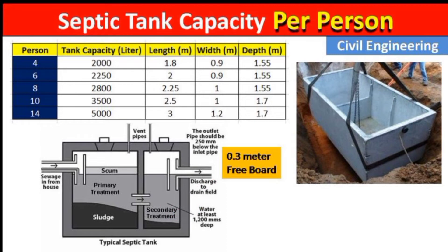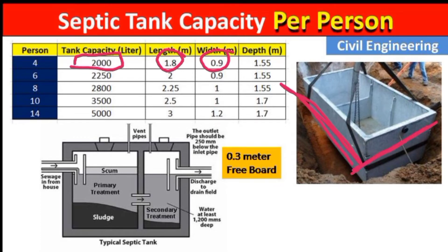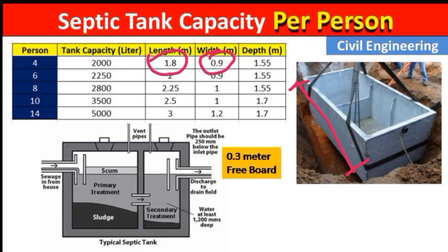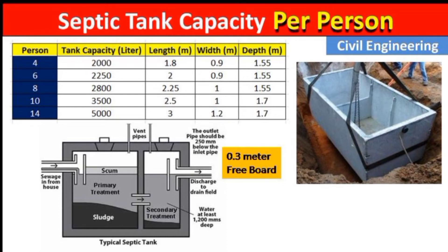Let us start our video. If you have four persons in your home, then the tank capacity should be 2000 liters. Its length should be 1.4 to 1.8 meters and the width should be 0.9 meters. You can see here — this is the length of the septic tank and this is the width. So the length is 1.8 meters and width is 0.9 meters for four persons, with a tank capacity of 2000 liters.